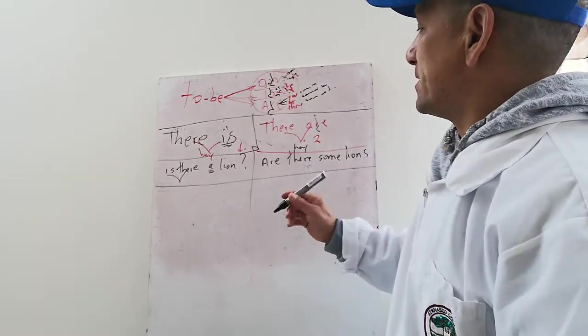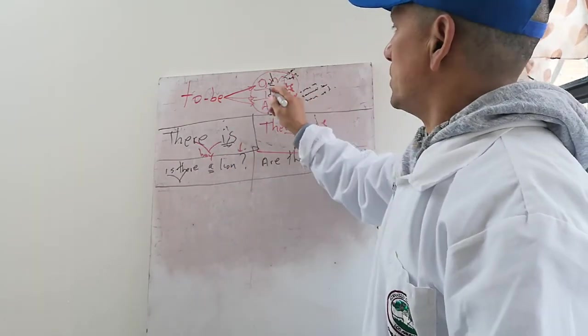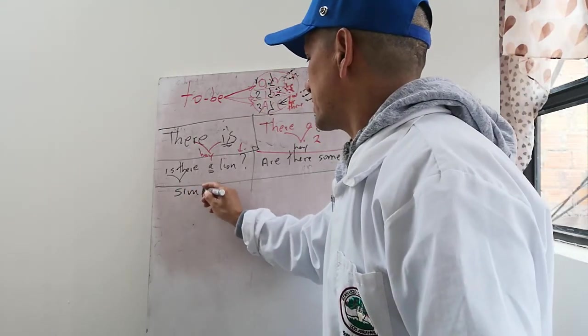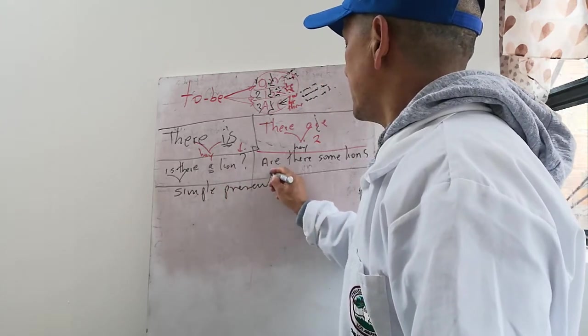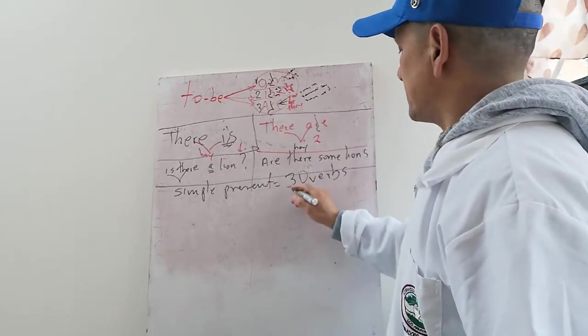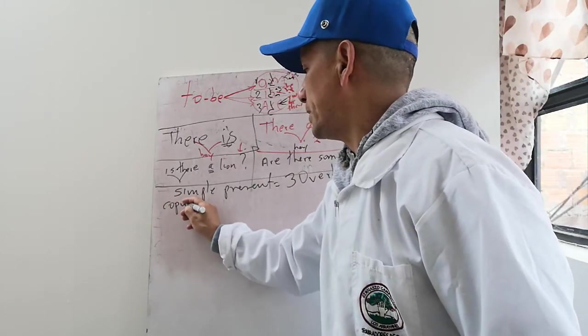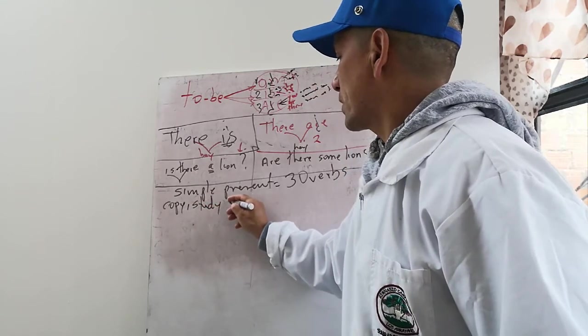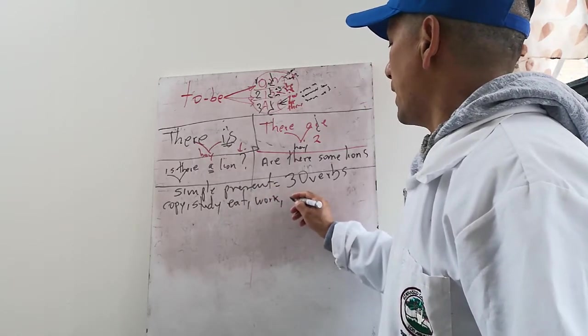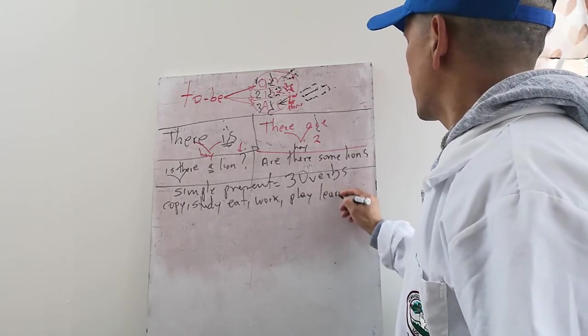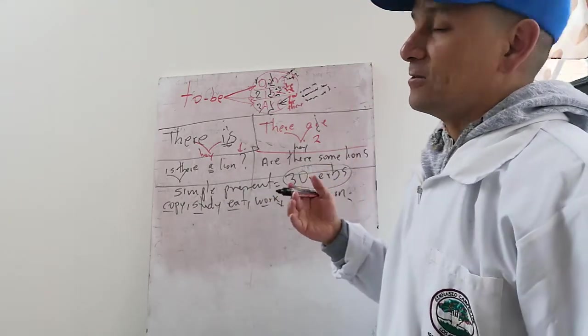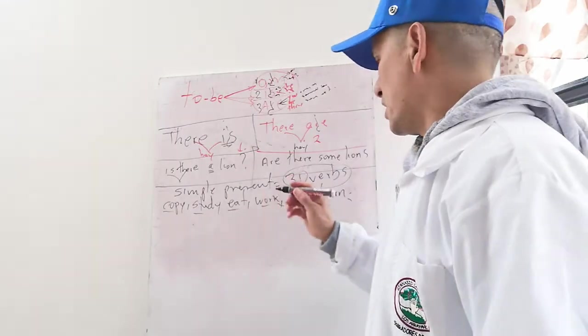El otro tema se llama presente simple, pero en este caso ustedes se aprendieron uno, dos, tres verbos. Para el siguiente tema que es simple present, básicamente es que ustedes los estudiantes en este momento ya se sepan treinta verbos. Verbos como copy, study, eat, work, play, learn. Deben de saberse treinta ya, más tres serían treinta y tres. Deben de saberse en este momento verbos, speak.